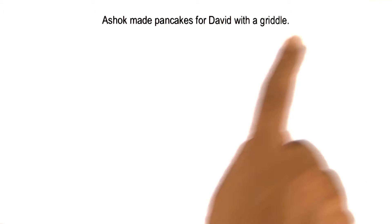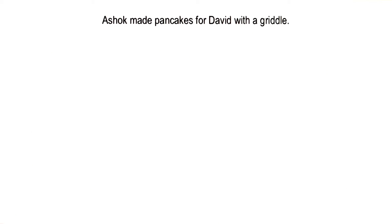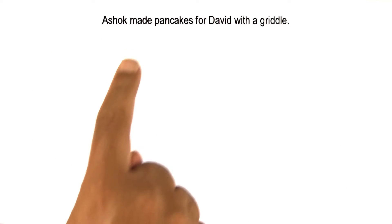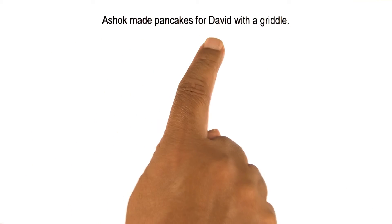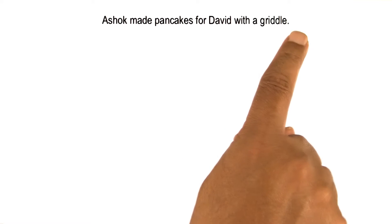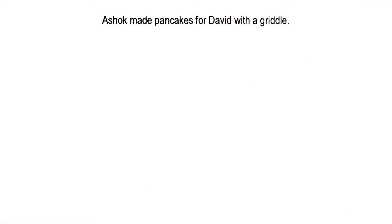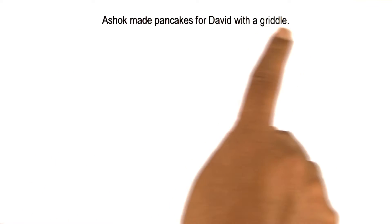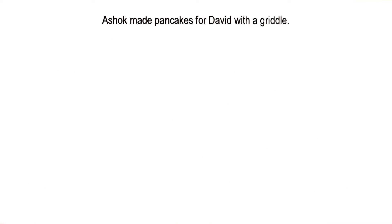Let us first consider a simpler sentence: Ashok made pancakes for David with a griddle. I'm sure you understood the meaning of this sentence almost immediately. But what did you understand? What is the meaning of meaning?